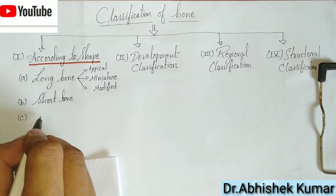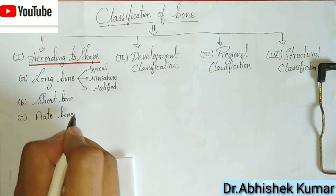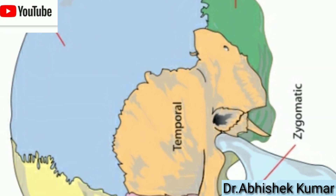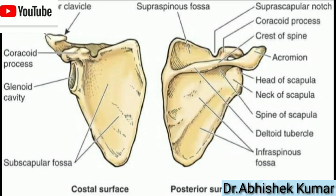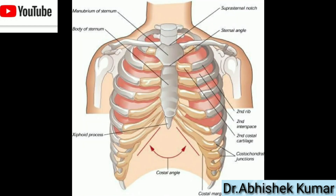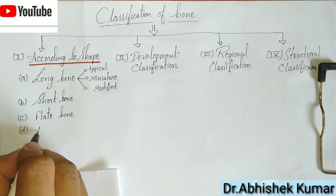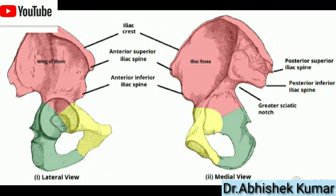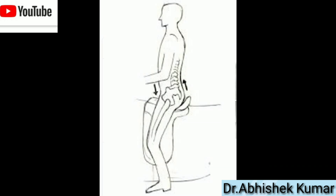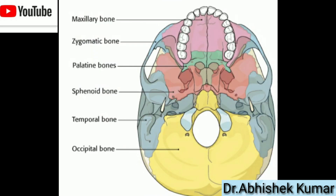Then come to the flat bones. Flat bones resemble a shallow plate, like the temporal bone, sternum, and scapula. Next are irregular bones such as vertebrae and hip bones, which are irregular in shape. Also the skull and the base of the skull, which you can see on the screen.